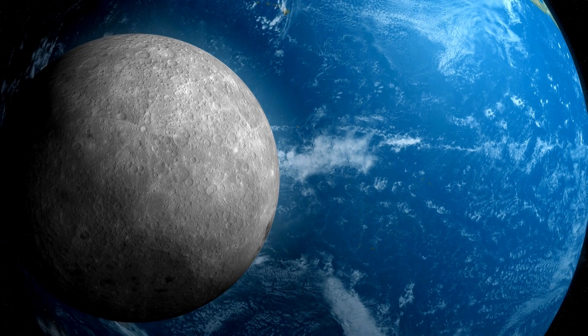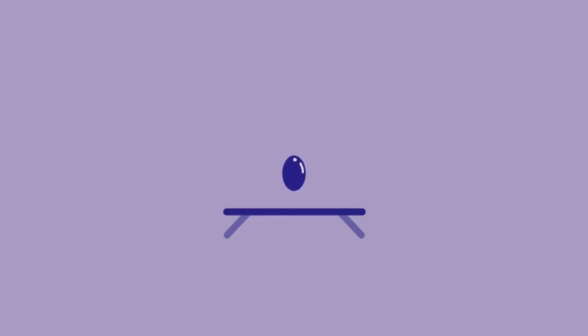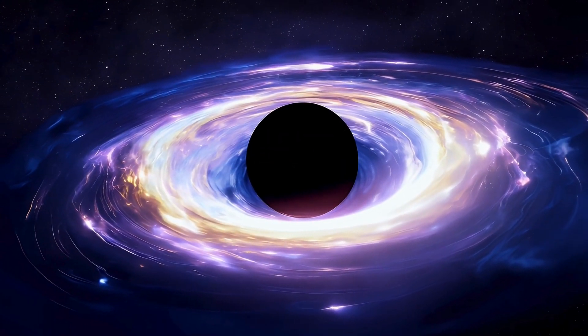So Earth isn't pulling on the Moon. Instead, it's bending space so the Moon follows a curved orbit. Imagine a bowling ball on a trampoline. The trampoline dips, and any smaller balls like marbles will roll toward it. That's essentially what gravity does to space-time.